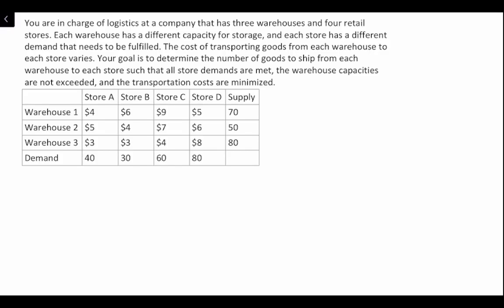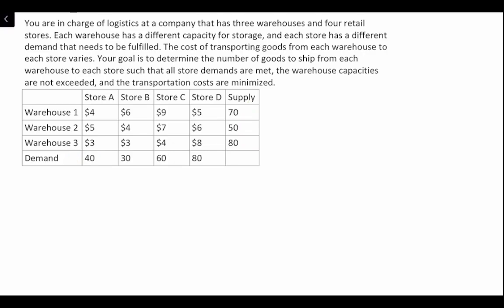Looking at this chart, we have three warehouses and four stores with different costs. To go from warehouse one to store A would cost four dollars per unit, and to go from warehouse three to store D would cost eight dollars a unit. In the margins we have supply: warehouse one has 70 units, warehouse two has 50 units, and warehouse three has 80 units. Store A has a demand of 40 units and store C has a demand of 60 units.